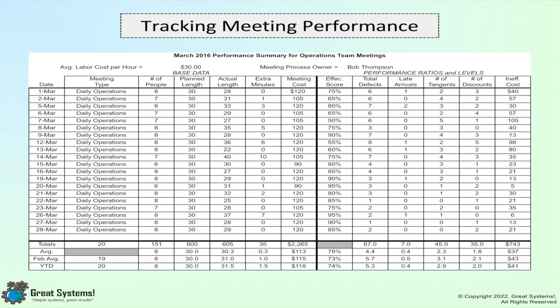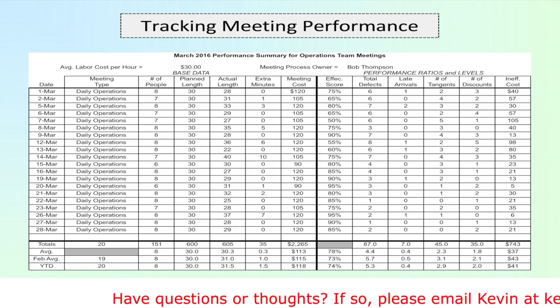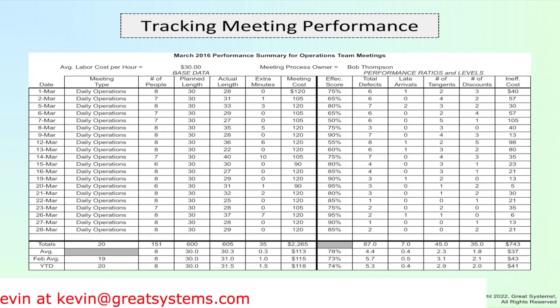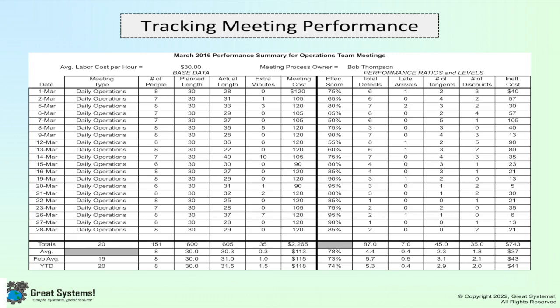In this example, each row of the spreadsheet is used to capture the detail specific to a given meeting — each row is a meeting. At a minimum, try to capture the number of people in the meeting, the planned and actual length of the meeting in minutes, the overall meeting effectiveness score, and the number of meeting defects that occurred. Additional columns can be used to track specific high-volume defect counts and to monitor performance by meeting type, such as conference call versus face to face. Meeting costs can also be estimated using a weighted average labor cost per hour rate, the actual meeting length, and the number of people in attendance.